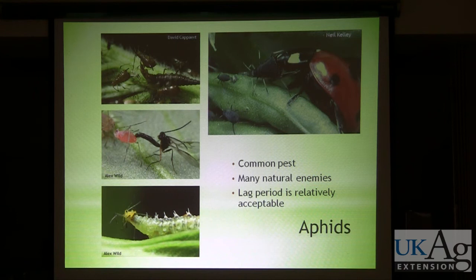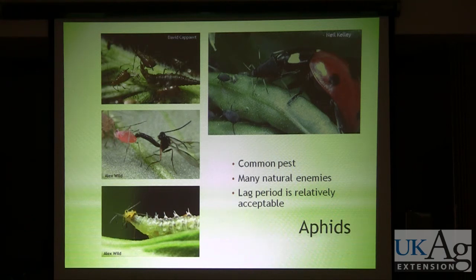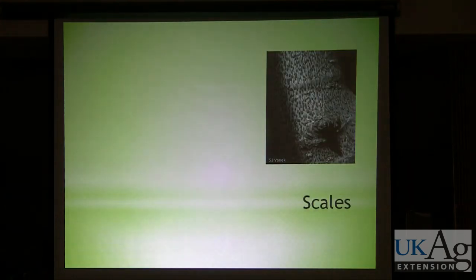Another example are aphids — a pretty common pest in the landscape with many different types of natural enemies. With aphids, there's a lag period between when the pest arrives at the plant and when the natural enemy finds and attacks it. That lag period with aphids is relatively acceptable. If you have a few aphids on your plant and you're not planning to sell it right away, they're not necessarily a major issue, versus a borer that bores into a tree — one borer and you basically can't sell that tree.